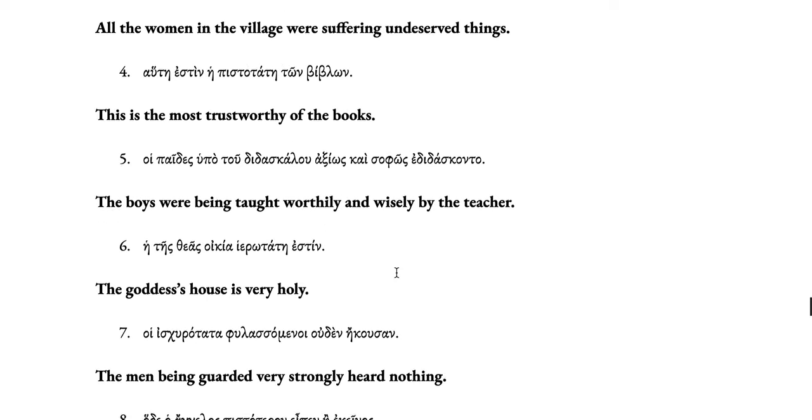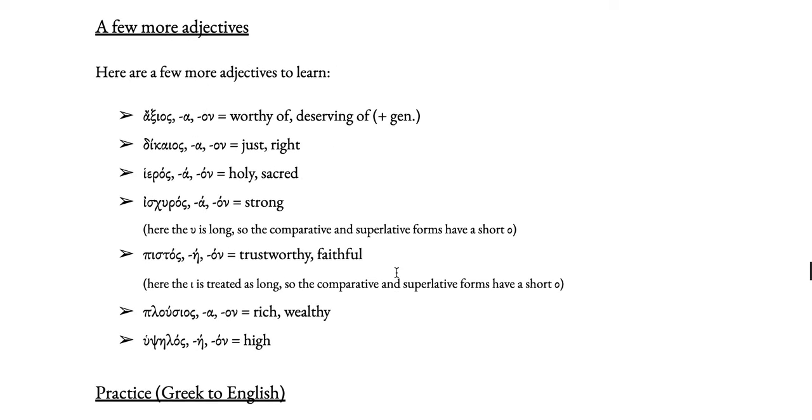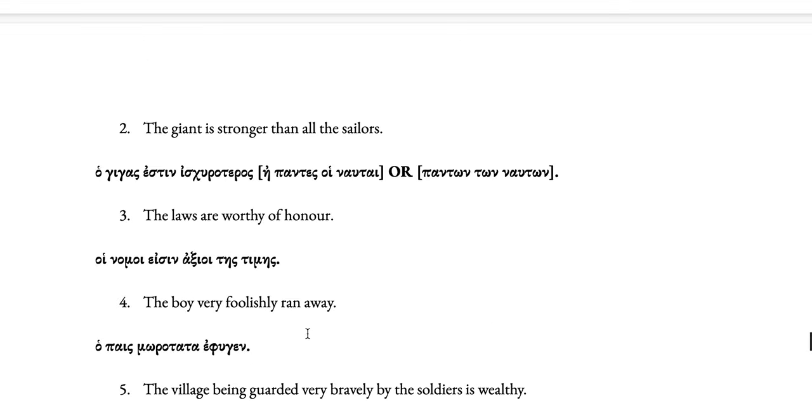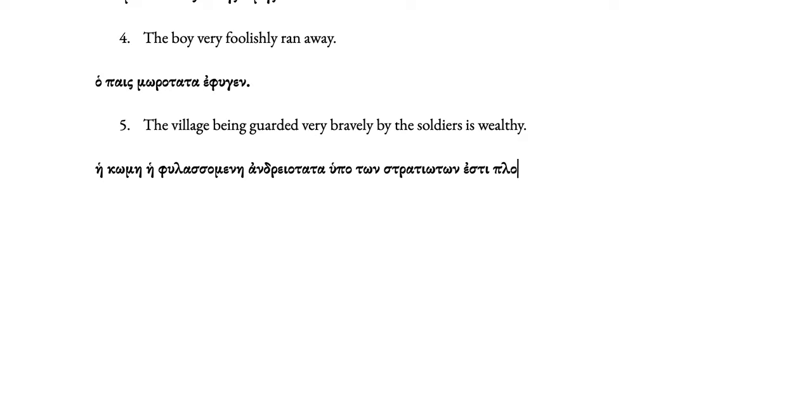Number three: the laws — hoi nomoi — are worthy — axioi — of honor — tēs timēs (axios takes genitive). Number four: the boy — ho pais — very foolishly — moros, stem mor-, last vowel is long, so short o, superlative tatos, adverb neuter plural: morotata — ran away — strong aorist of pheugō, ephuge. Number five: the village — hē kōmē — the one being guarded (repeat article and present passive participle: hē phulassomenē) — very bravely: andreos, stem andr-, ei is long so short o, superlative tatos, adverb: andreotata — by the soldiers: hupo tōn stratiōtōn — is wealthy: esti ploudia (plouia for feminine, plousios).